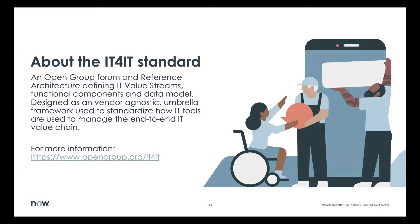A little bit about the IT4IT standard. This is an Open Group standard that is a reference architecture for how IT value streams and functional components — the functions in IT and how they work together. There's a data model there, there's a flow model. You can find out more at the Open Group slash IT4IT as the URL.